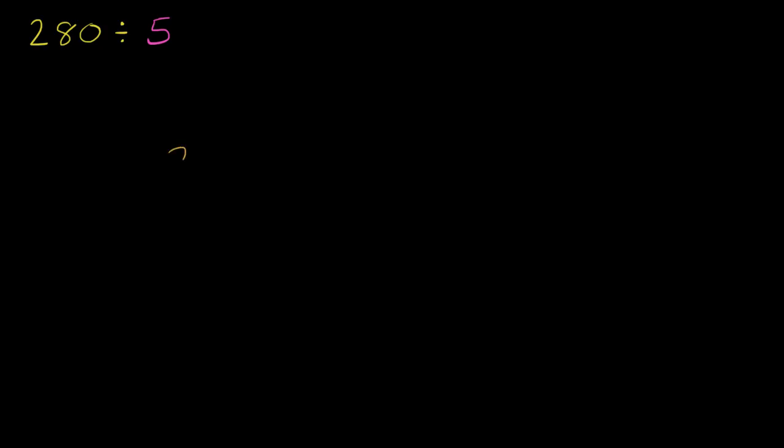So let's have a go at it. We could rewrite this as 280 divided by five. So the first question we can ask ourselves is how many times does five go into two? Well, five doesn't go into two at all. It goes zero times. Zero times five is zero, and then we subtract. Two minus zero is two, and now we can bring down the next digit, which in this case is an eight.